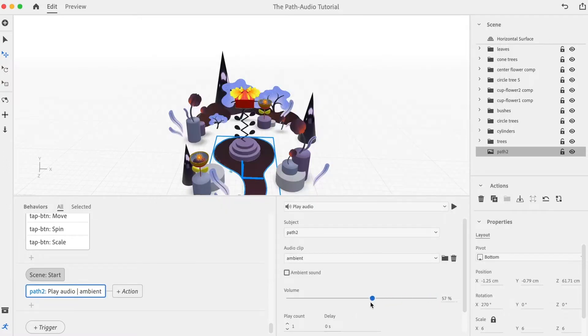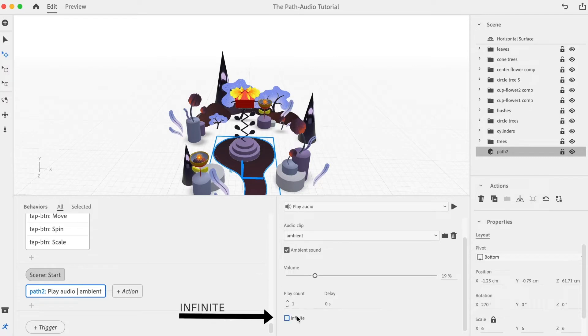Next, I'm going to select ambient sound. This will play at the same volume throughout the experience. And finally, I'll select infinite. This track is a perfect loop, so it will just seamlessly repeat over and over.